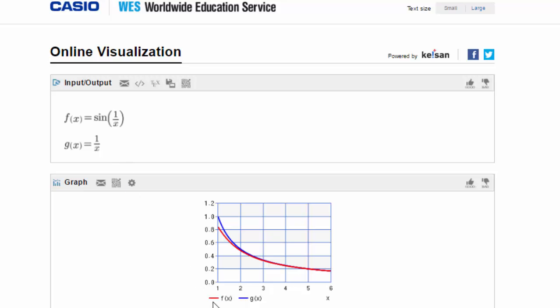The red graph is a graph of sin(1/x). The blue graph is a graph of 1/x. You see that the blue graph is always on top of the red graph.